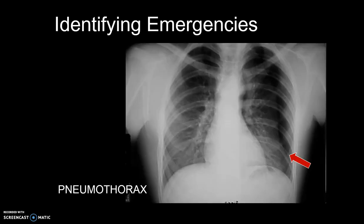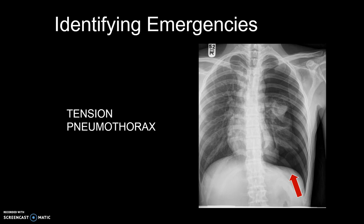A pneumothorax can be often difficult to see. The classic appearance is of a pencil-thin line which represents the lung's edge. You can see the thin pencil line here, but the heart has shifted, which indicates there is tension with this pneumothorax. This patient needs a chest tube very quickly.